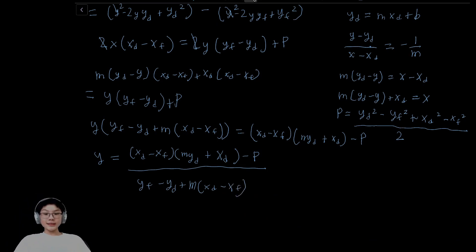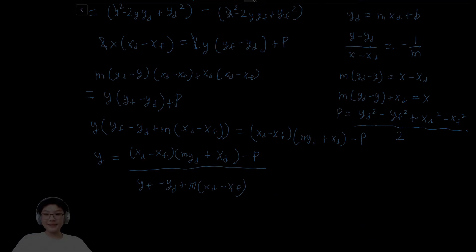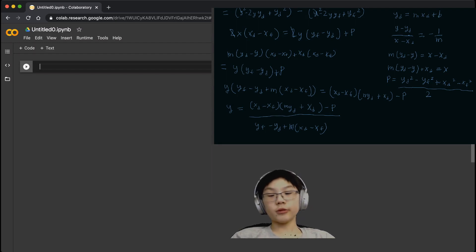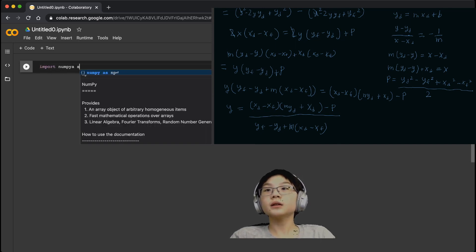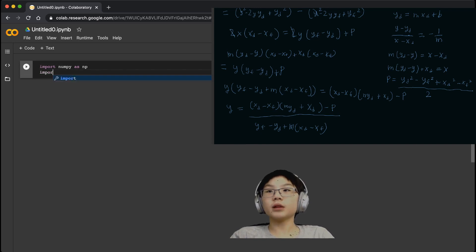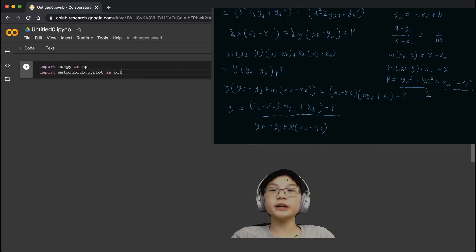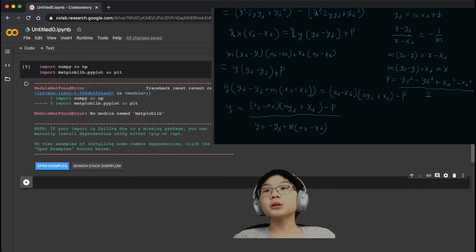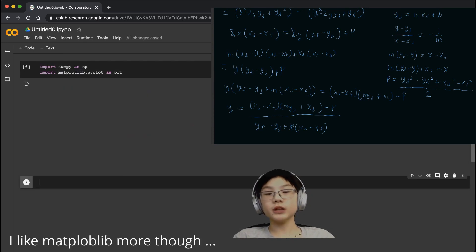Now let's plot this using Colab. Since we now know xd, yd, xf, and yf, let's get plotting. We have Colab open, so let's start by importing both NumPy and Matplotlib. Import numpy as np, and import matplotlib.pyplot as plt, then shift-enter to run that. There we go.